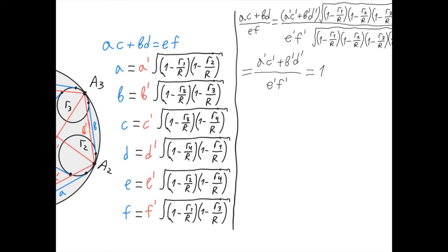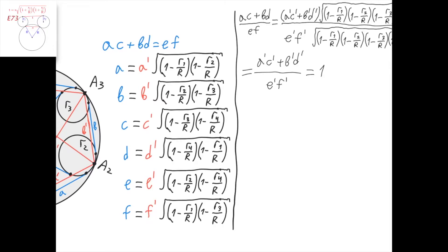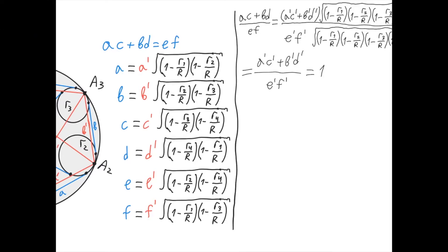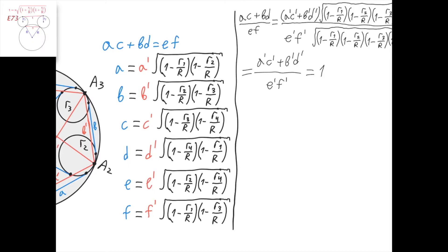From this proof it should be clear why we take the inner common tangent line instead of the outer common tangent line when two of the circles touch the larger circle on two different sides — because if we want to use the Mickey Mouse lemma for two circles tangent to the large circle on opposite sides, we need to use the inner common tangent line. The proof of Casey's theorem for all other configurations is analogous: first use the Mickey Mouse lemma, then use Ptolemy's theorem.